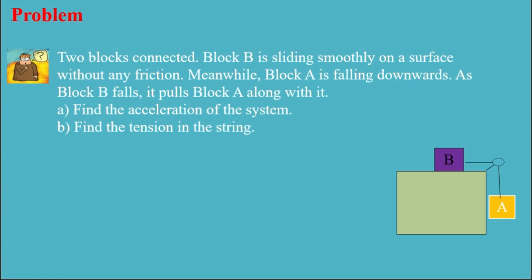So here I have two blocks A and B, and A is falling down. I need to find the acceleration of the system and also the tension in the string. I'm gonna start with B and draw the free body diagram. Here I have a normal force, then the mass, so it's m_B g, and in the x direction I have the tension of the rope.